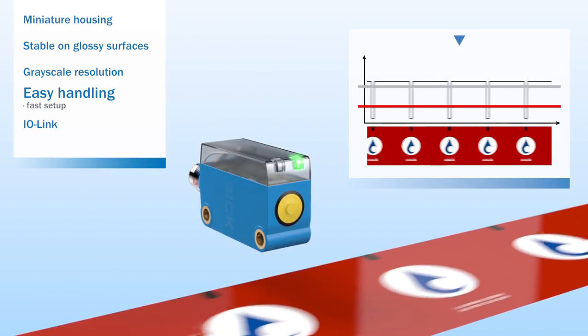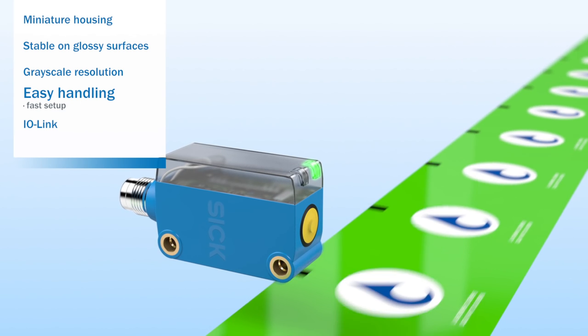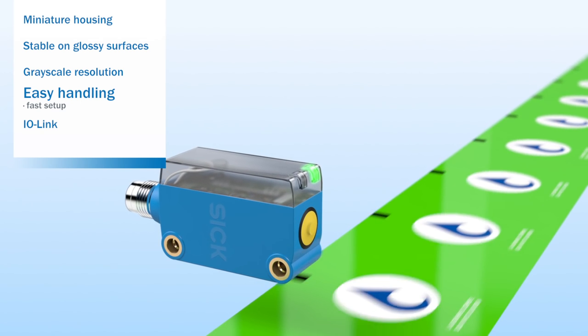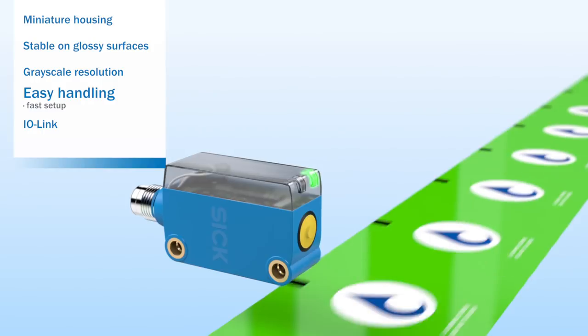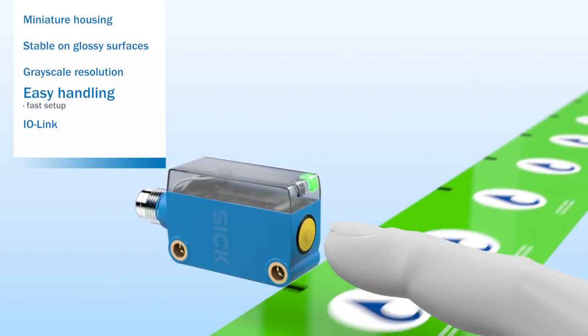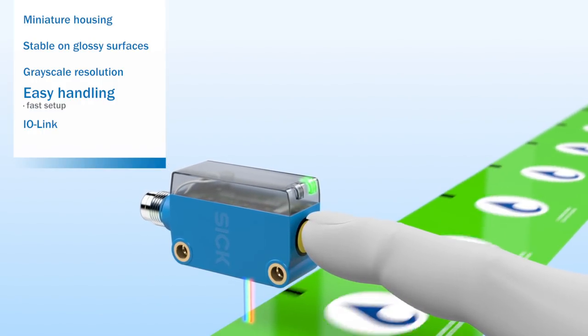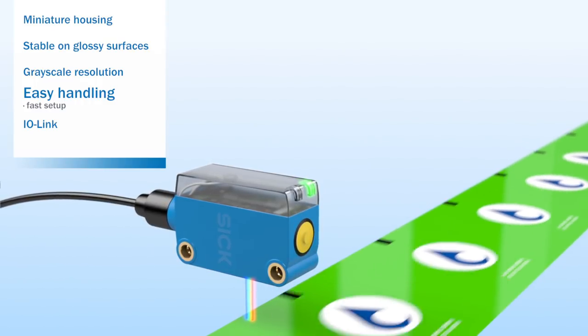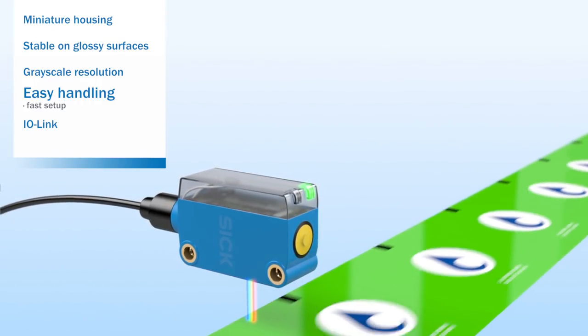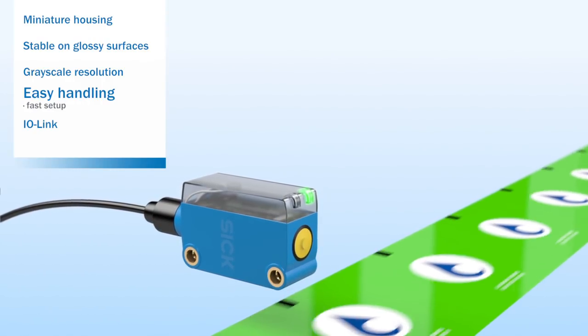Supplementary to these static methods, dynamic teach-in of materials is also supported. If the push button is pressed and held down while the material is running or a signal is sent via the control cable, the KTM will capture the differences in brightness between background and mark.